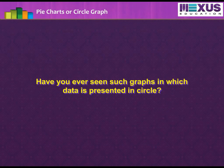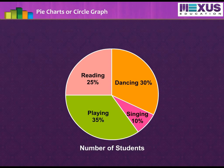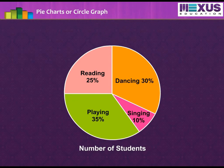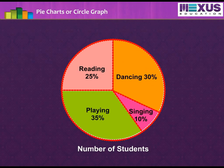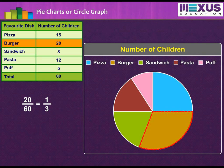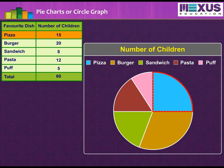Have you ever seen graphs in which data is presented in a circle? These types of graphs are called pie charts or circle graphs. A pie chart shows the relationship between a whole and its parts. The whole circle is divided into sectors, and the size of each sector is proportional to the activity or information it represents. For example, in this pie chart, the proportion of the sector for favorite dish as burger equals the number of children with favorite dish as burger divided by total number of children, which is 20 by 60, equal to 1 third. So we can infer that out of all students, 1 third like burger as their favorite dish. Similarly, we can find proportions for others too.